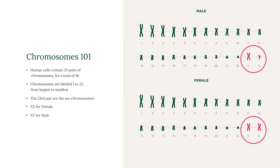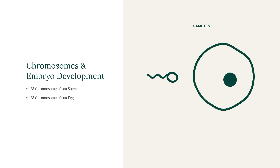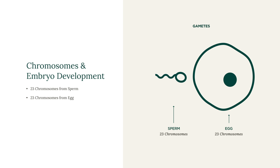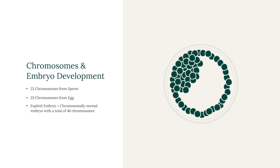It is very important for normal development and function that a cell has this exact number of 46 chromosomes. Mature reproductive cells will not contain pairs of chromosomes. Both the egg and sperm should only contain 23 chromosomes — half the chromosomal complement. Ideally, during fertilisation, the egg and sperm each contribute 23 chromosomes, so the resulting embryo will have 46 chromosomes.